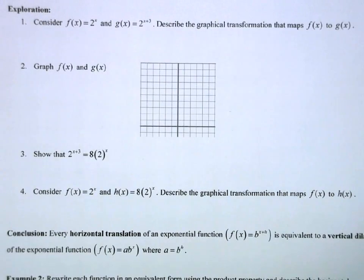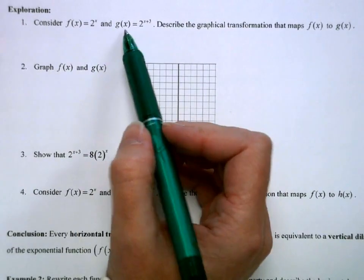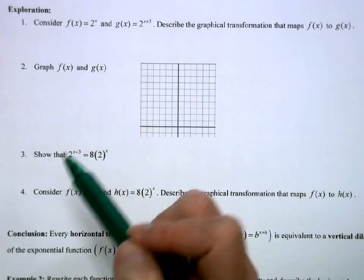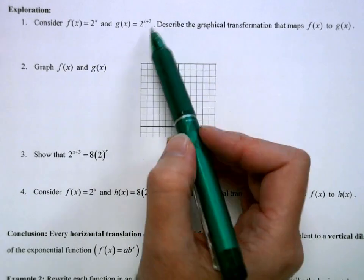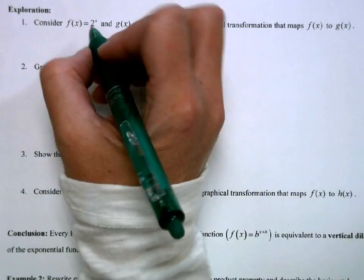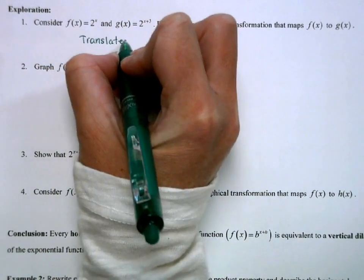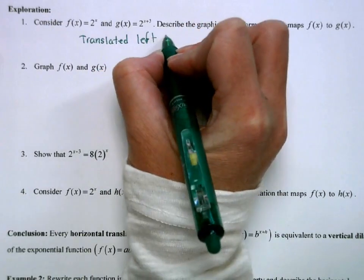We're going to tie this back to a unit 1 topic of transformations. If I had the graph of 2 to the x and g of x is 2 to the x plus 3, what is the graphical transformation? Well, if we're adding directly to the x value, that's going to move this to the left. It's going to translate the graph to the left 3 units.